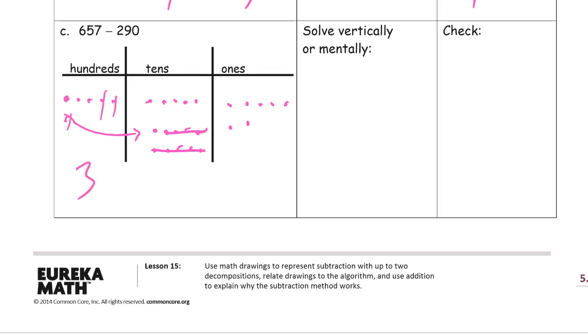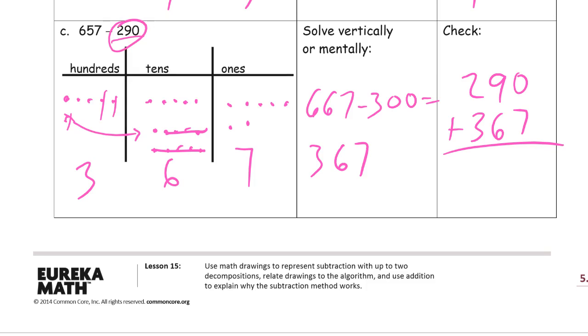What's left? 3 hundreds. 6 tens. And all 7 ones. Looking at this mental strategy looks pretty good here. That's almost 300. So I just have to add 10 to both of these. 667 minus 300. And I'm going to check this vertically.